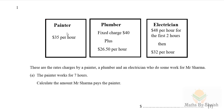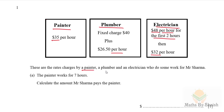Question one gives prices for a painter, plumber, and electrician. The painter charges $35 per hour. The plumber has a fixed charge of $40 plus $26.50 per hour. The electrician charges $48 per hour for the first two hours, then $32 per hour after that.